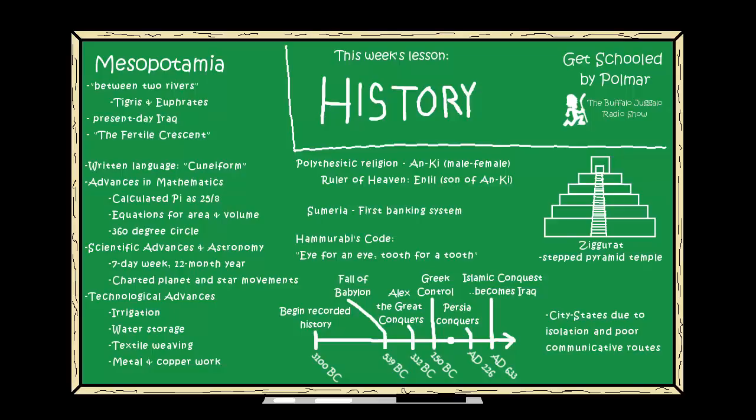Besides science and math, Mesopotamia developed many other technologies, including metal and copper working, glass and lamp making, textile weaving, flood control, water storage, and irrigation. Irrigation was huge — they planted a wide variety of crops, fruits and vegetables, and made irrigation ditches to spread water across the whole valley. They were also famous for establishing the first banking system.